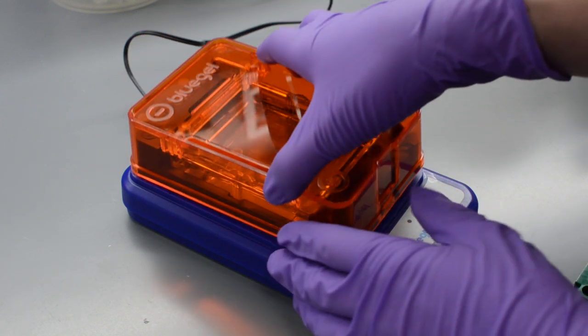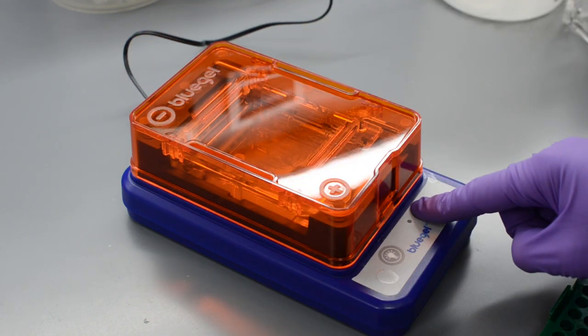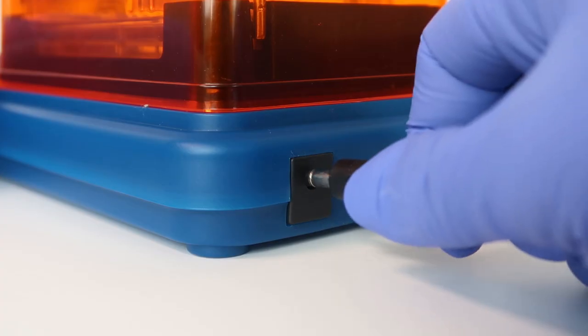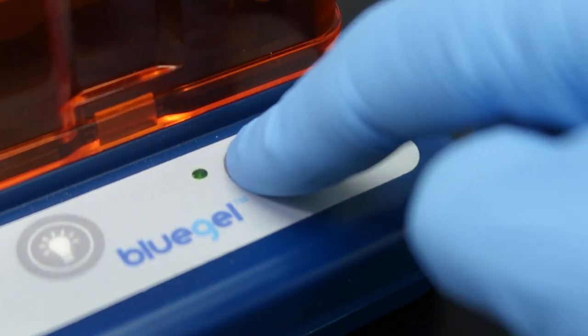Running the gel is as simple as snapping on the cover and pressing the power switch. BlueGel plugs directly into an outlet with no need for additional wires, an external power source, or worry about setting the correct voltage.